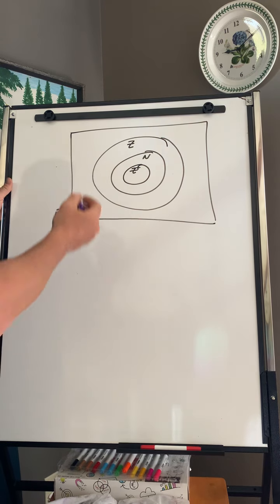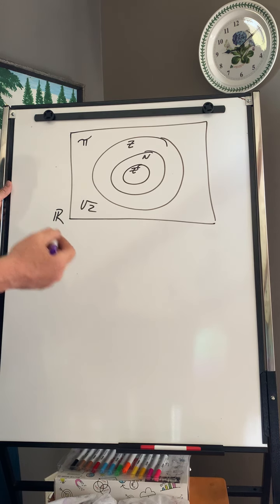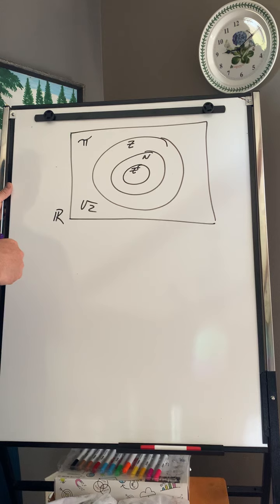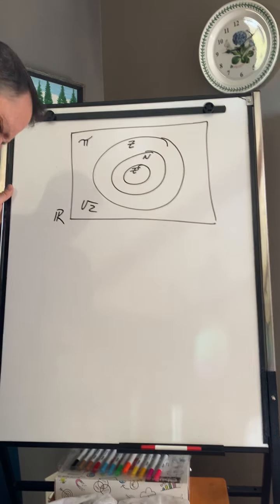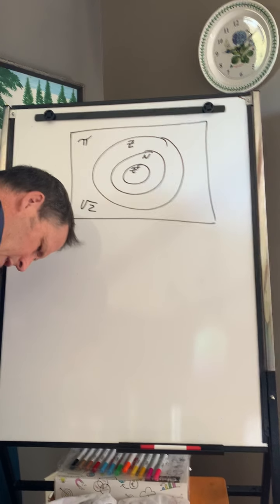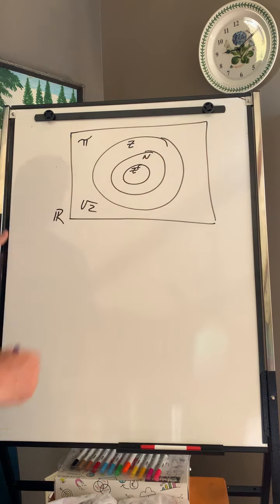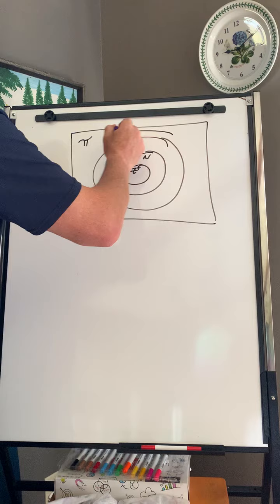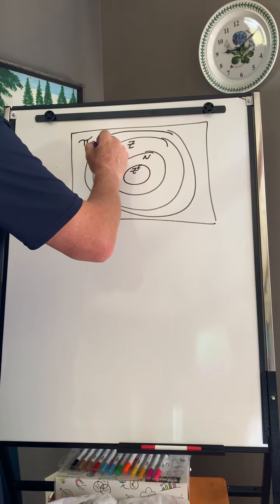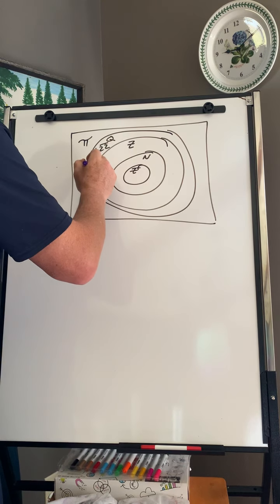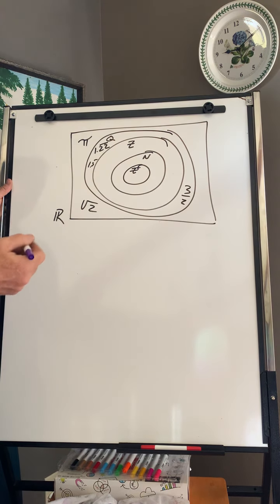So the reason why is because out here, we can have decimals like pi, square root 2. Those are irrational. So they go outside. So I guess I need another circle that includes rational numbers. Which is going to have decimals: 1.22 repeat, 1.5, 3 over 2. Rational numbers.